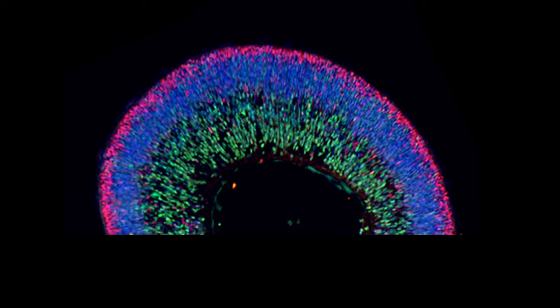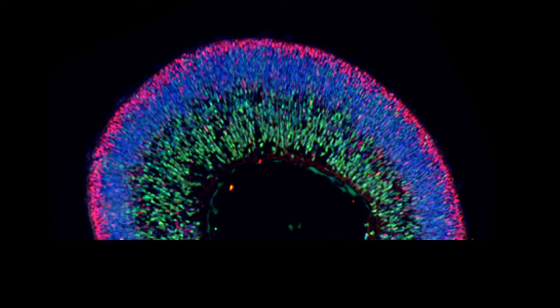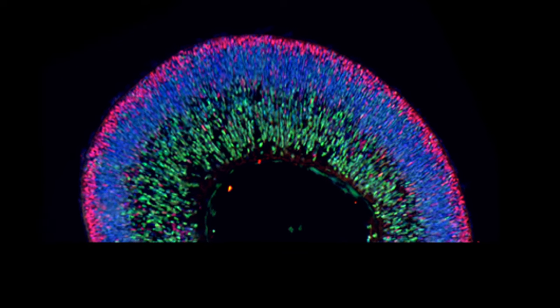This includes ganglion cells, amacrine, horizontal and bipolar inner neurons, Mueller glia, and importantly the rod and cone photoreceptors.